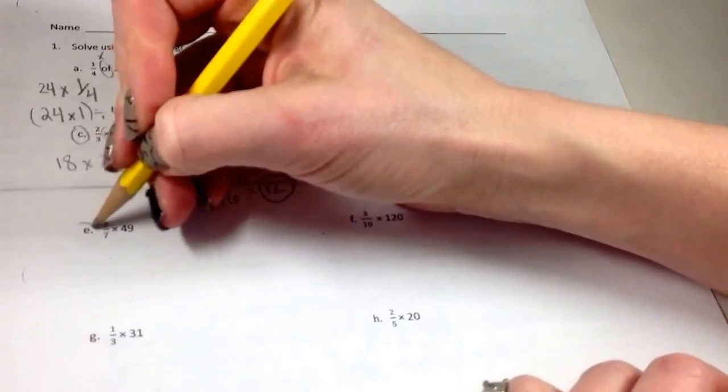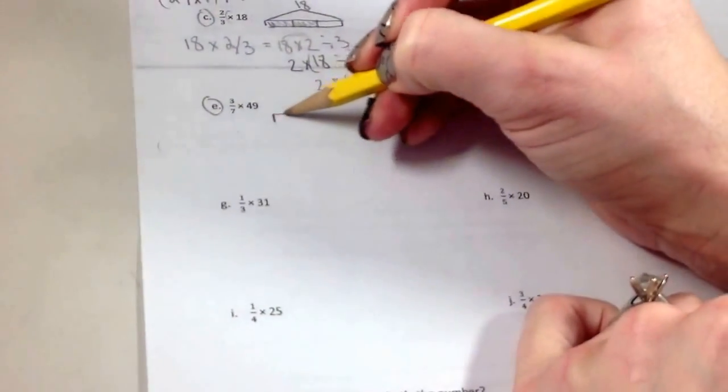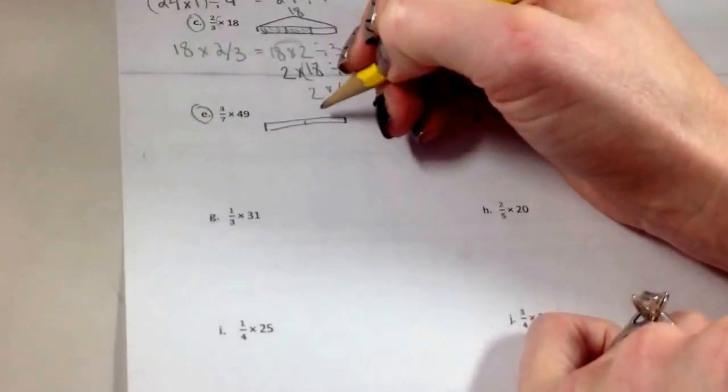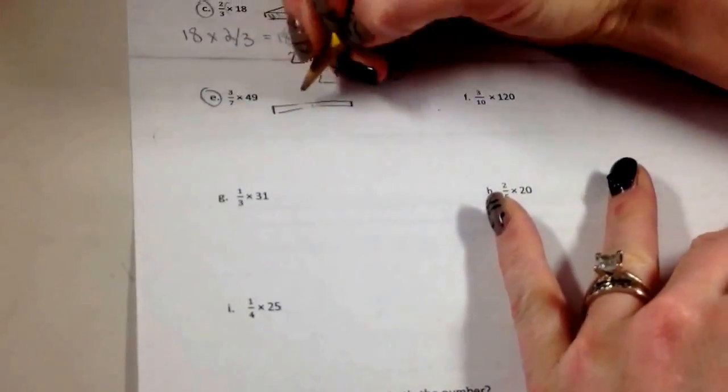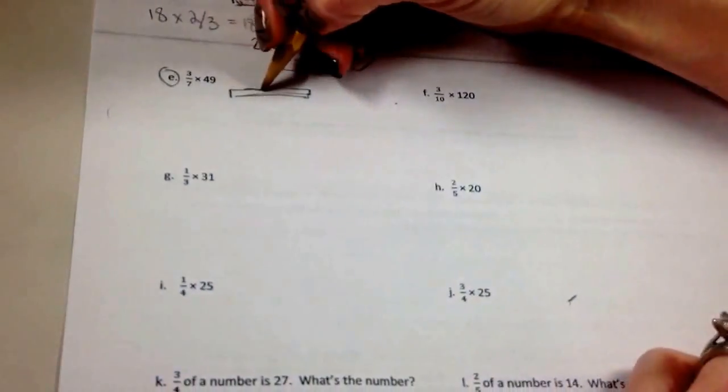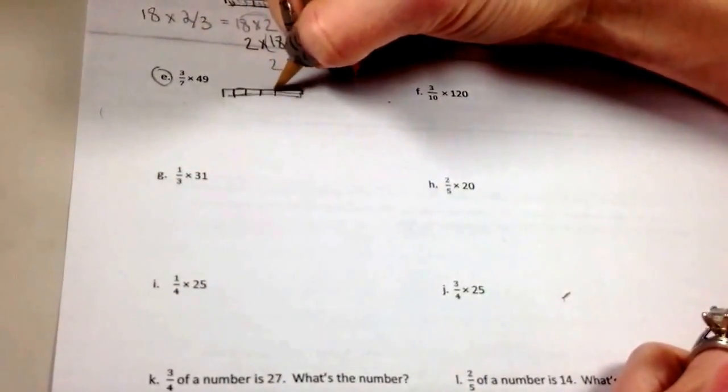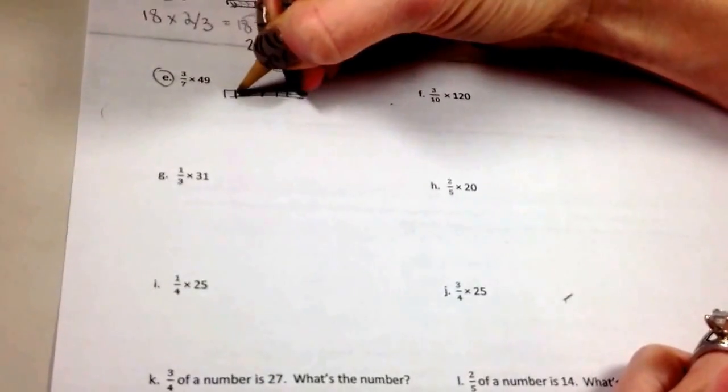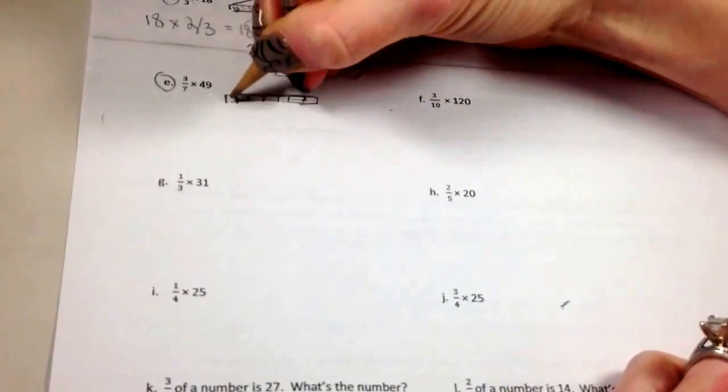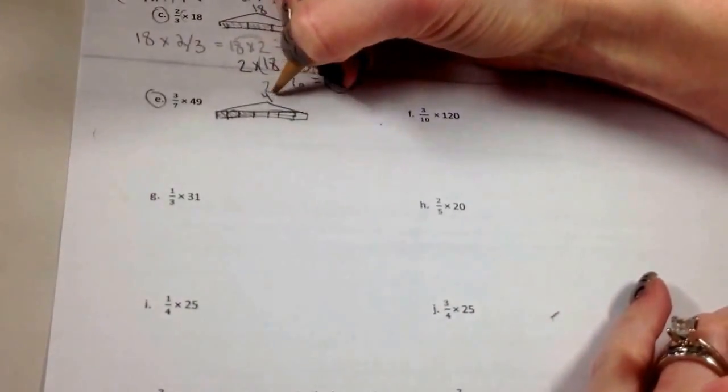We'll look at this one. This, again, you want to draw your picture. Three-sevenths. So I want to split into 7 pieces here, which isn't going to make sense if I do a piece in the middle. Okay, let me just make sure that that's erased well. So I have 1, 2, 3, 4, 1, 2, 3, 4, 5, 6. I need 7 pieces. Okay. And then 3 of them are shaded. And the whole amount is 49.